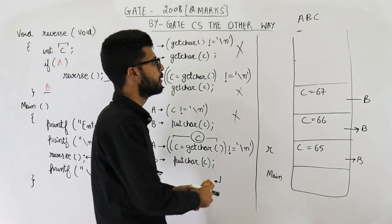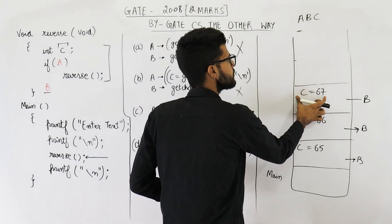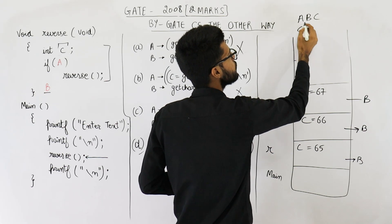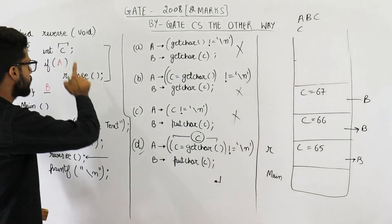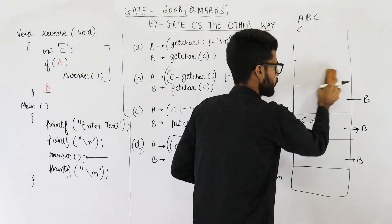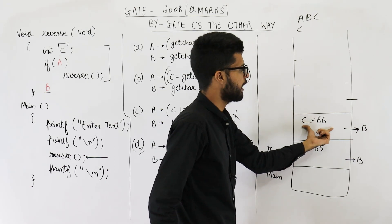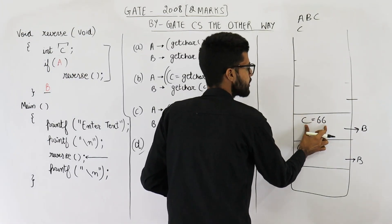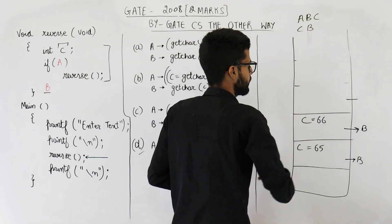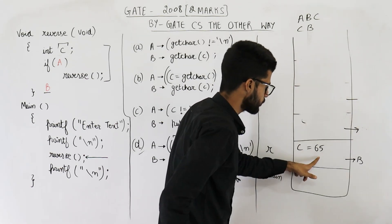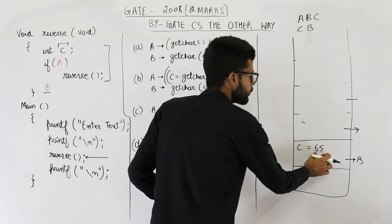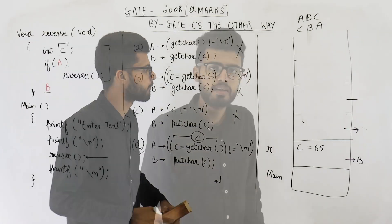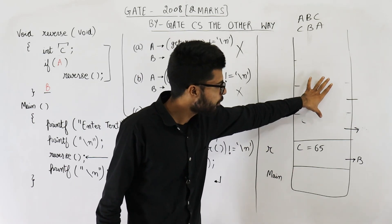The remaining line is putchar(C), which wants to print C — 67 is the ASCII value of capital C, so capital C is printed. Now this function has also executed all its lines, so it is popped. Control returns to its calling function, and you resume from line B: putchar(C), which prints 66, the ASCII value of capital B, so capital B is printed. Then that record is also popped. You come to the next function, execute the remaining line putchar(C), and print 65, the ASCII value of capital A. We have printed the reverse of the string the user entered.